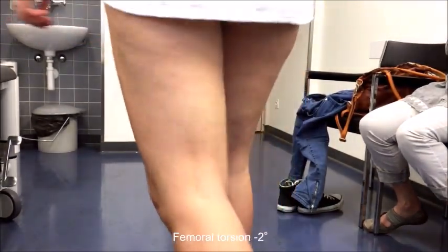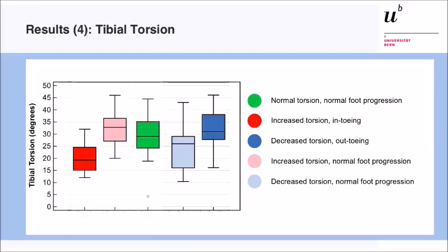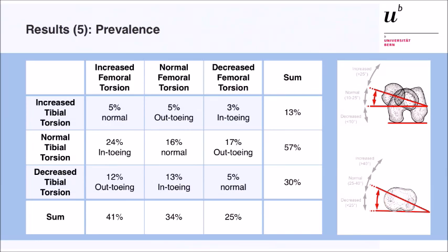You can basically have any combination of these two angles. What actually accounts for the difference between groups? In the normal group the tibial torsion is measured here. Patients with increased femoral torsion compensate with increased tibial torsion, ultimately achieving a normal gait. Conversely, patients with decreased femoral torsion can compensate to a normal foot progression angle if they have low tibial torsion. This shows how often we observed those compensatory combinations.